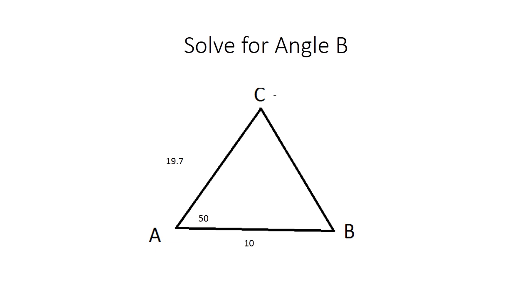Now, I've set up my triangle using the convention that capital A, capital B, and capital C represent the angles. Little a, which I don't have marked here, would be this side. Little b is this side, which is 19.7, and little c is 10.